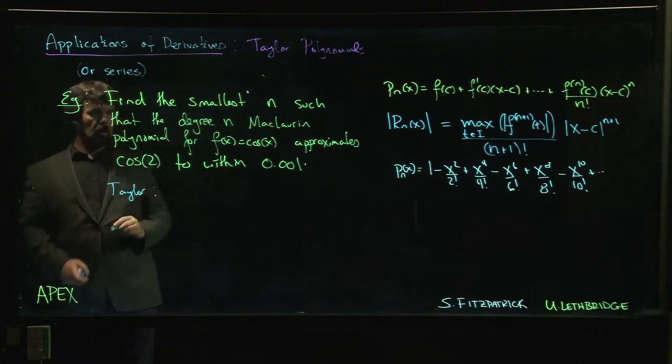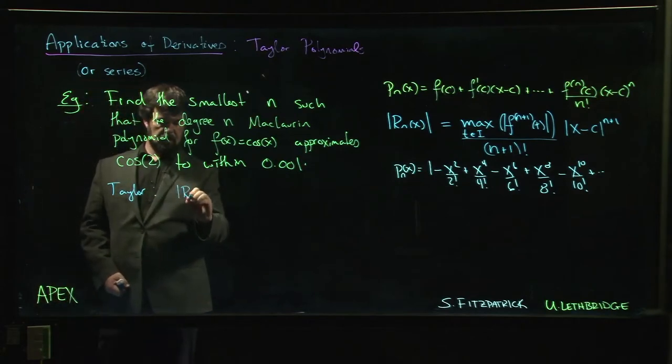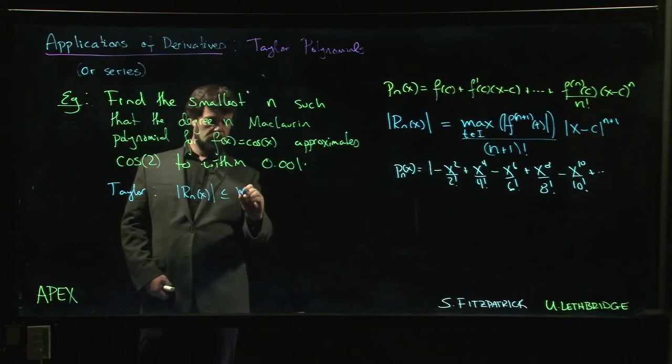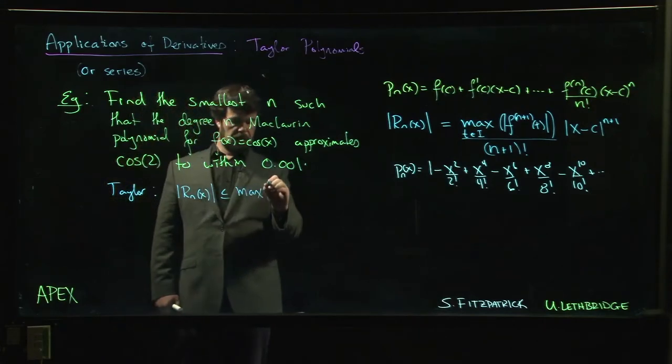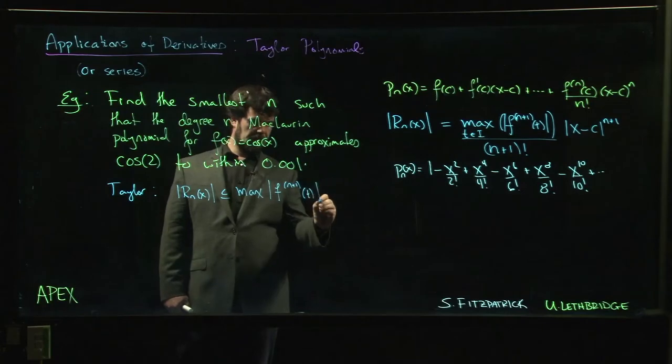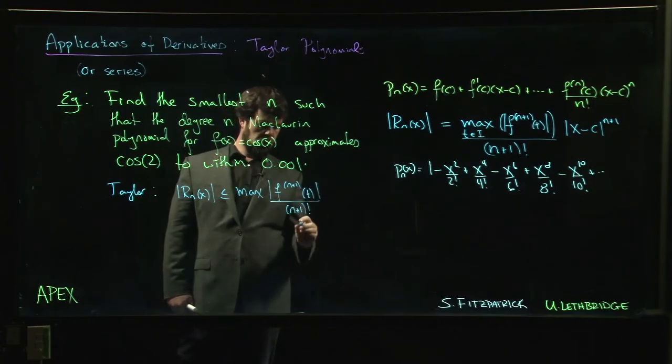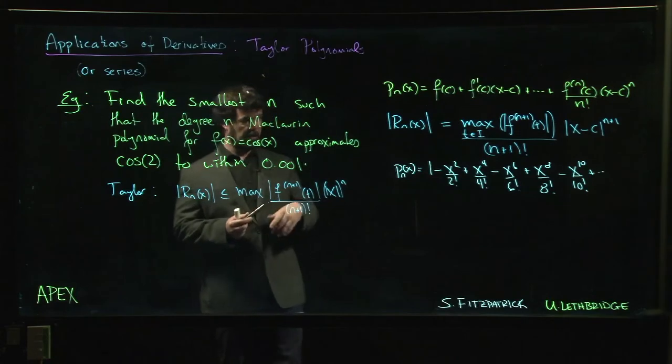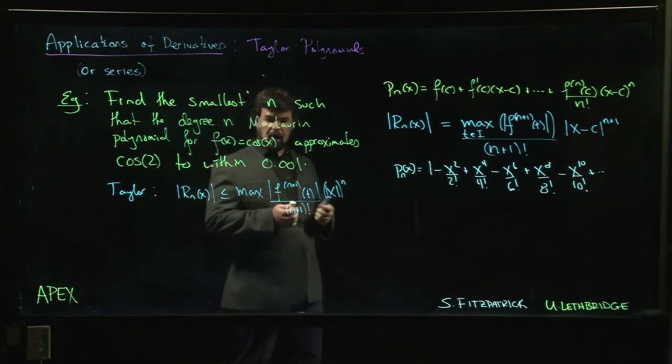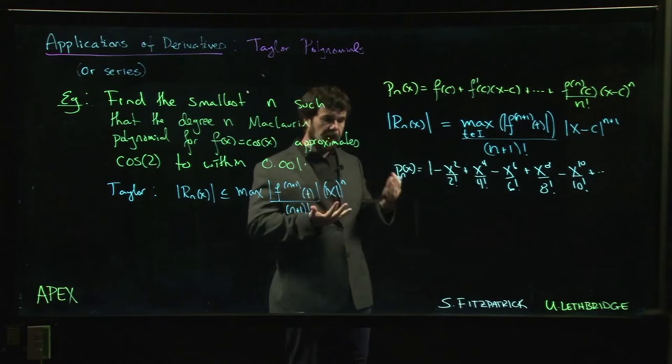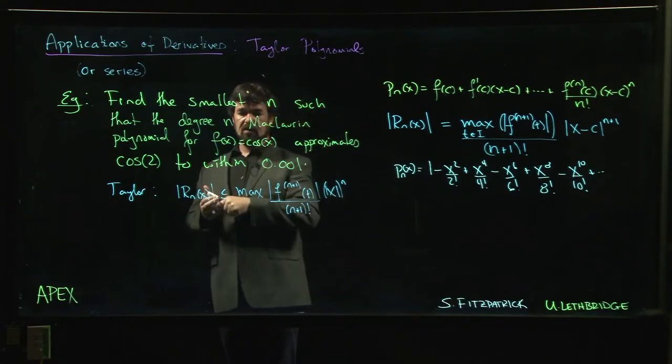Again we rely on Taylor's theorem. I know that by Taylor's theorem the remainder is always going to be less than or equal to this maximum value for the n plus first derivative at some t over n plus 1 factorial. And this is just simply going to be absolute value of x to the n plus 1, because we're centering at 0, so x minus c just becomes x.